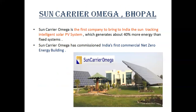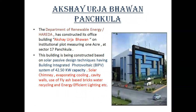The second case study is Sun Carrier Omega, Bhopal. Sun Carrier Omega is the first company to bring to India a sun-tracking intelligent solar PV system, which generates about 40% more energy than a fixed system, and has commissioned India's first commercial net zero energy building. The third is Akshay Urja Bhavan, Panchkula. The Department of Renewable Energy, Haryana has constructed its office building Akshay Urja Bhavan on an institutional plot of one acre at Sector 17, Panchkula. This building is based on solar passive design techniques with a building-integrated photovoltaic system of 42.50 kilowatt capacity, solar chimney, evaporative cooling, cavity walls, use of fly ash with water, recycling, and energy-efficient lighting.